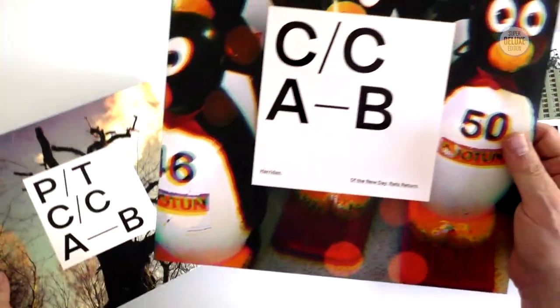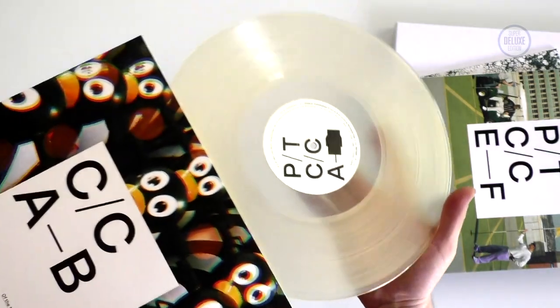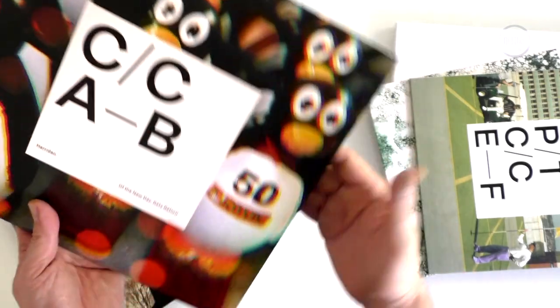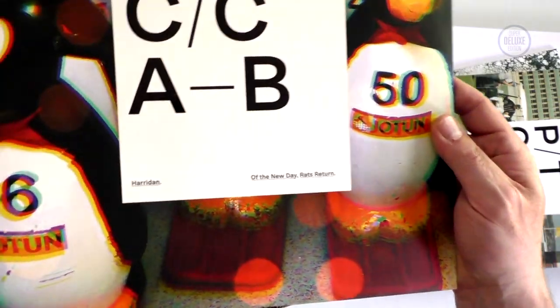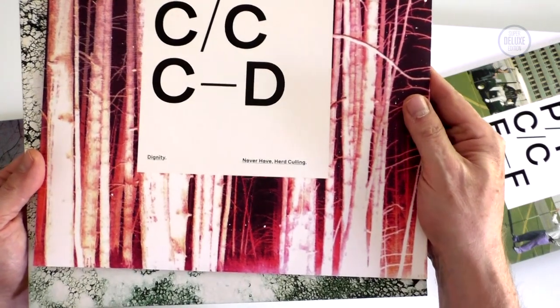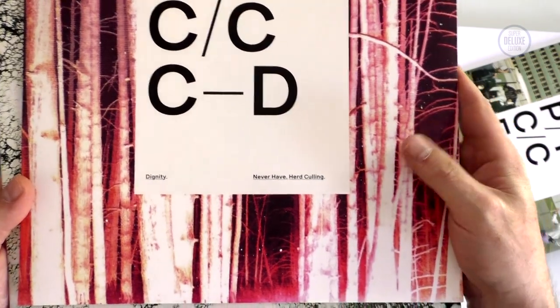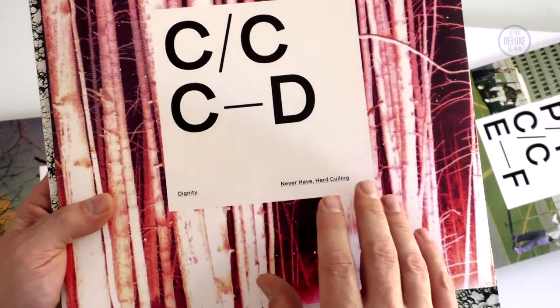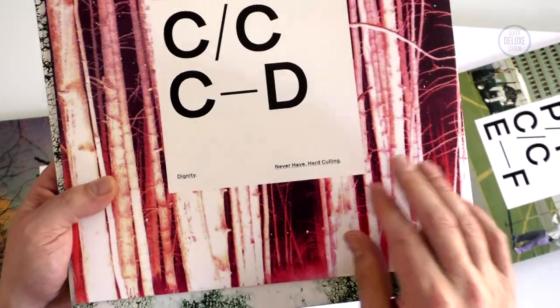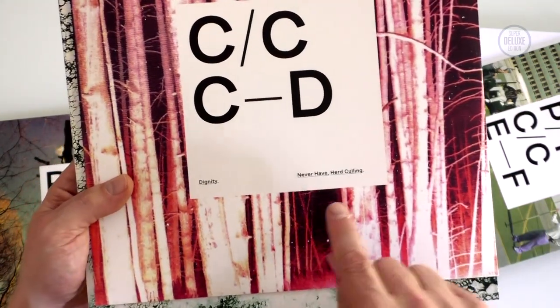This is on clear vinyl, three clear vinyl records, 45 RPM. Side A has Harridan on it, and side B has Of the New Day and Rats Return. This is the second of the three records. Side C has Dignity, and Never Have which is one of the bonus tracks is on side D along with Herd Culling. It's interesting - I think it's probably more to make them fit. I was going to say it's interesting that the bonus tracks are mixed in with the album, but I just think logistically with the lengths of some of the tracks they could not have left them to the end.